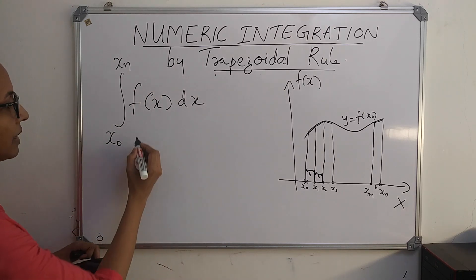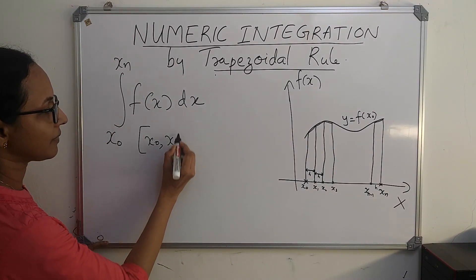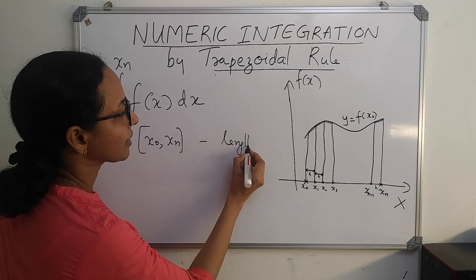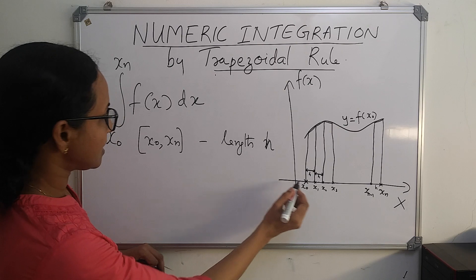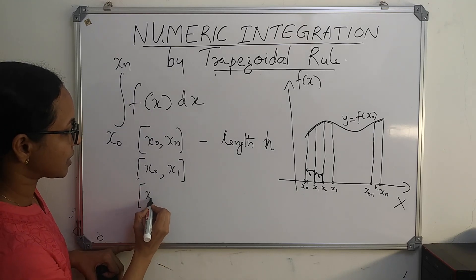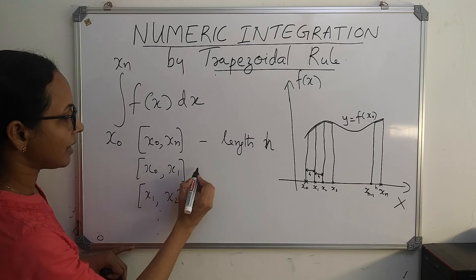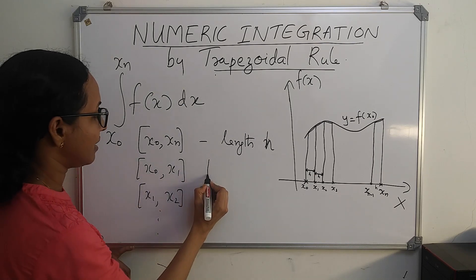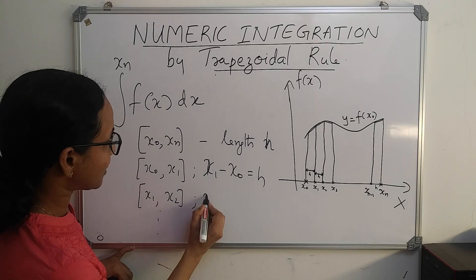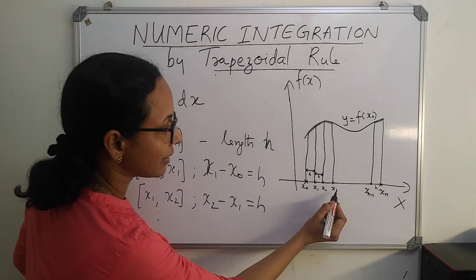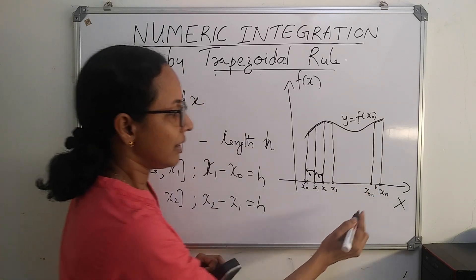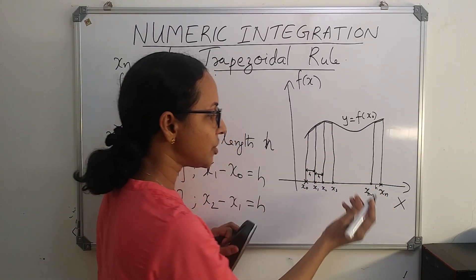In the trapezoidal rule, we divide the interval x₀ to xₙ into equal subintervals of length h. I have divided this interval into x₀ to x₁ (first interval), x₁ to x₂ (second interval), and so on. The difference between consecutive points — x₁ minus x₀, x₂ minus x₁, x₃ minus x₂ — will each be equal to h. We are dividing the interval from x₀ to xₙ into equal subintervals.